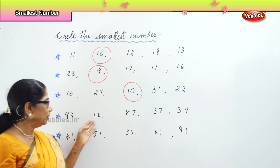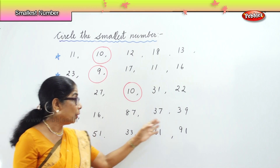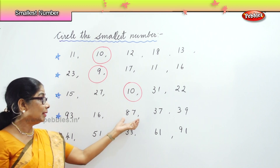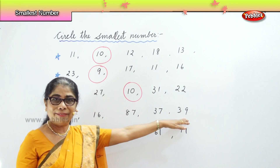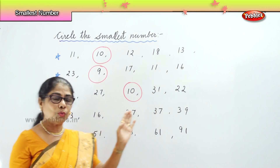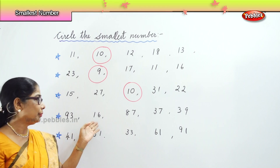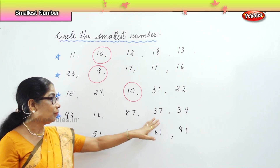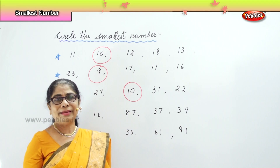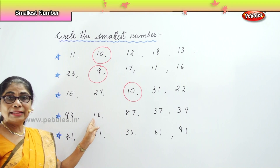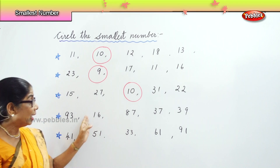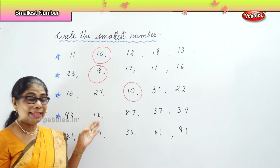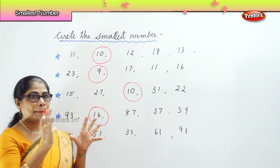Another difficult one here. We have numbers in nineties, tens, eighties, thirties. Let's say the numbers aloud: ninety-three, sixteen, eighty-seven, thirty-seven, thirty-nine. Now which is the smallest? Very clear — sixteen. Ten and six: sixteen is the smallest among nineties, eighties and thirties. Sixteen is the smallest among the five numbers here.